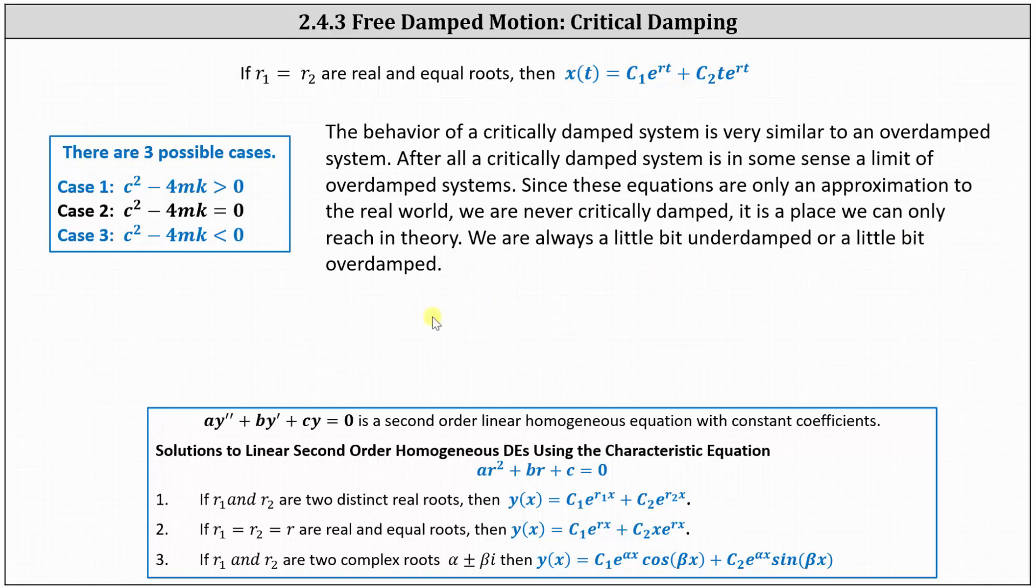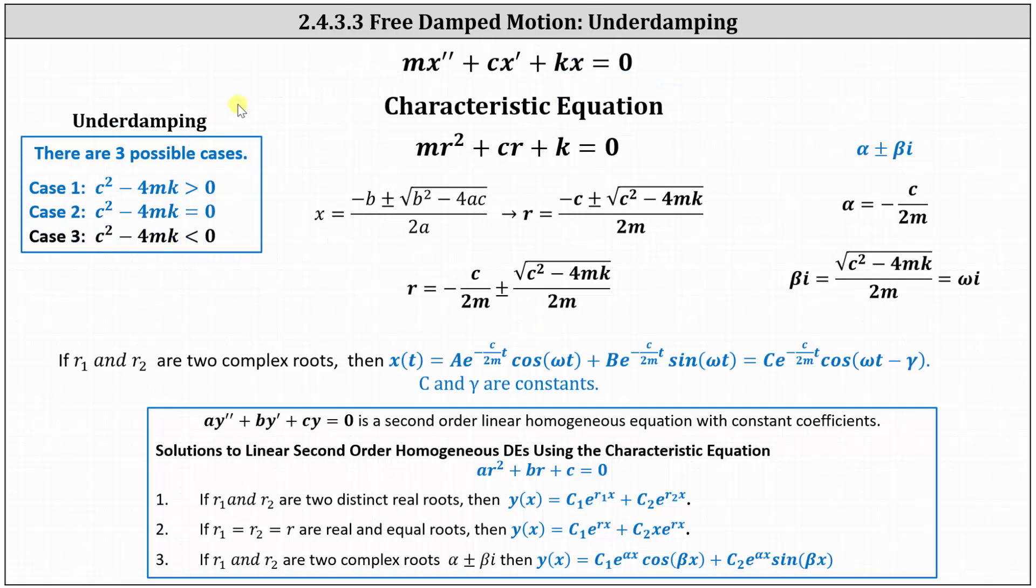Now let's look at the last case where c squared minus 4mk is less than zero. In this case, we have underdamping. If the discriminant is negative, we have two complex roots. If the solutions are alpha plus or minus beta i, alpha is negative c divided by 2m, and beta i equals the square root of c squared minus 4mk all divided by 2m. After simplifying, beta is just the coefficient of i.